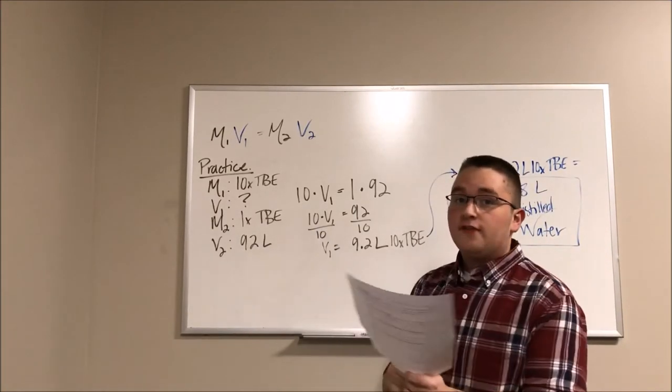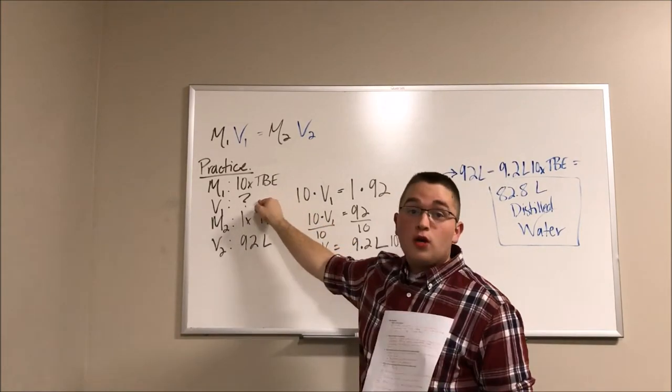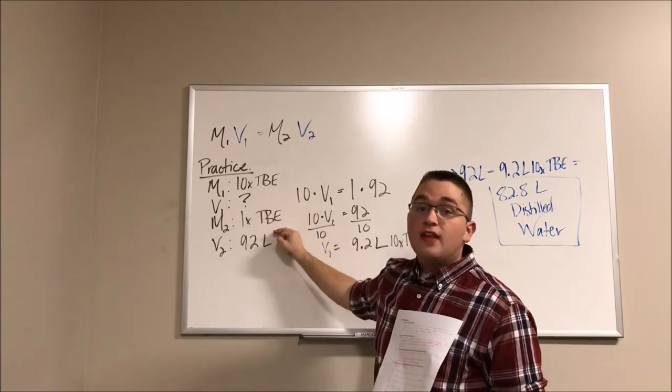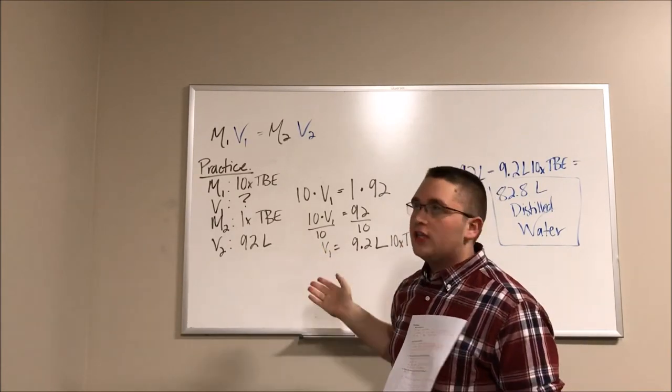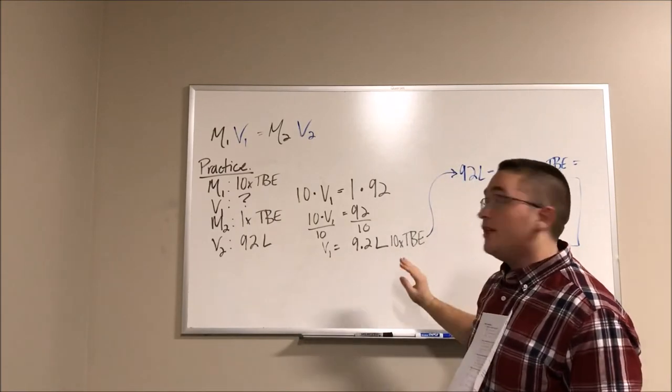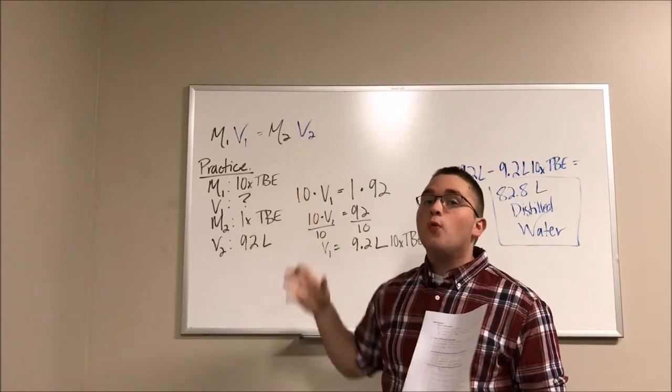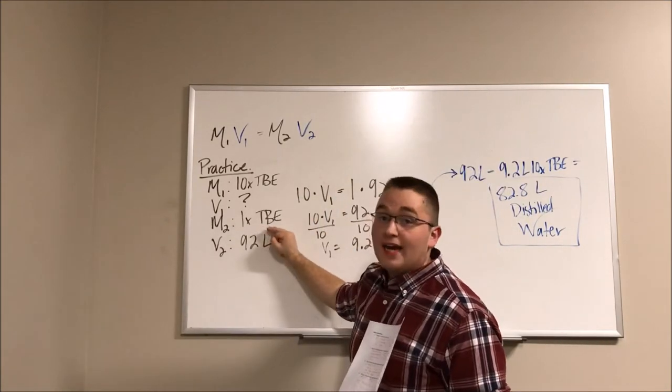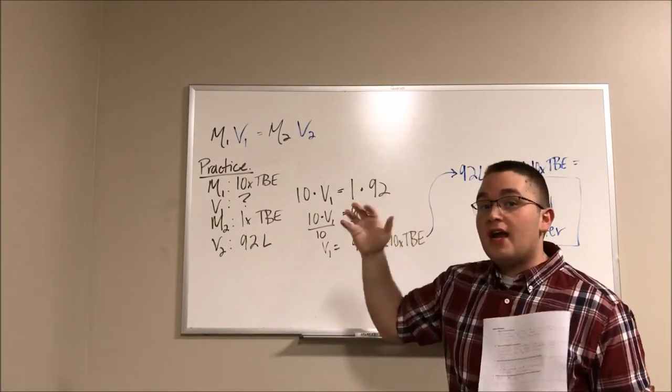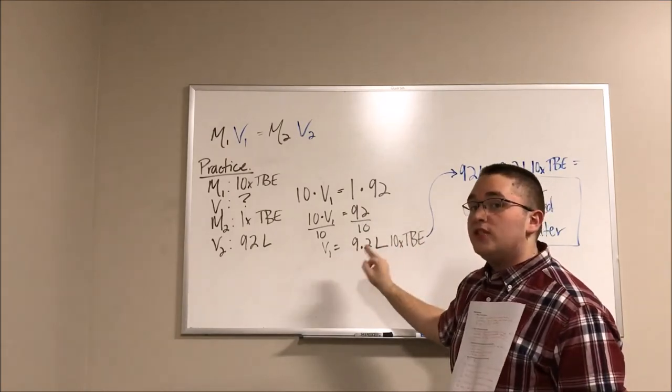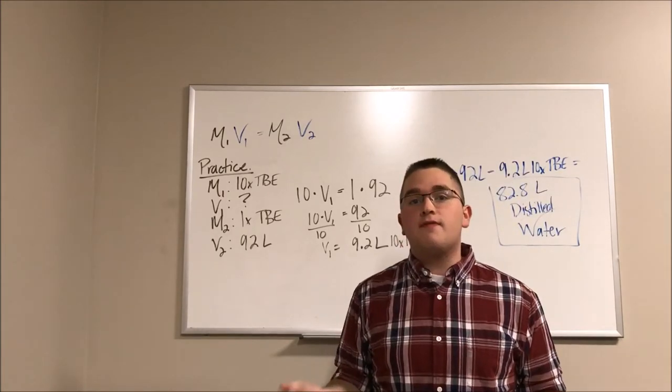And that's what our final answer is going to be. So let's walk through this again real briefly just so we're all on the same page. We know that we want to start with 10X TBE. We don't know what our volume is going to be in the beginning. We know we want to end with 92 liters of a 1X solution. We plug everything into our dilution equation very carefully of course. And that yields us 9.2 liters of 10X TBE. That is how much of the 10X solution we are going to have to add. Then we take 92 liters, which is how much we want to end with, and subtract by the known value of 9.2 that we just solved for to get 82.8 liters of distilled water.